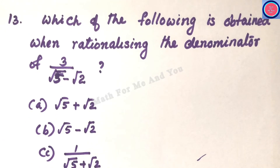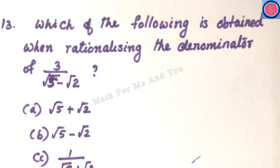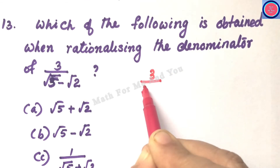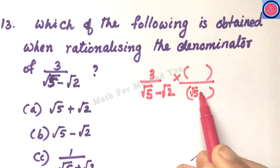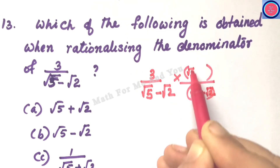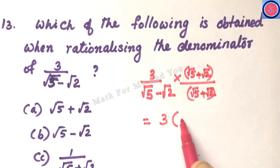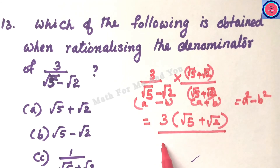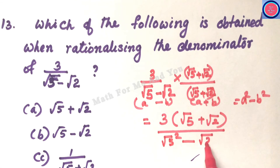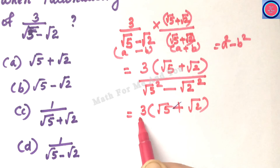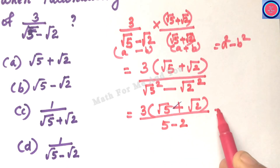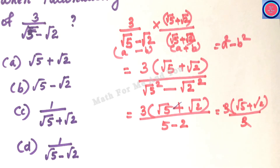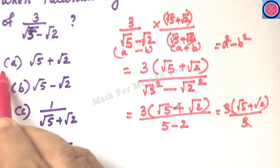Q13: Which is obtained when rationalizing the denominator of 3 ÷ (√5 − √2)? The denominator has two terms, so multiply numerator and denominator by the conjugate √5 + √2. The numerator becomes 3(√5 + √2) and the denominator becomes (√5)² − (√2)² = 5 − 2 = 3. Canceling the 3 top and bottom gives √5 + √2 — option A.